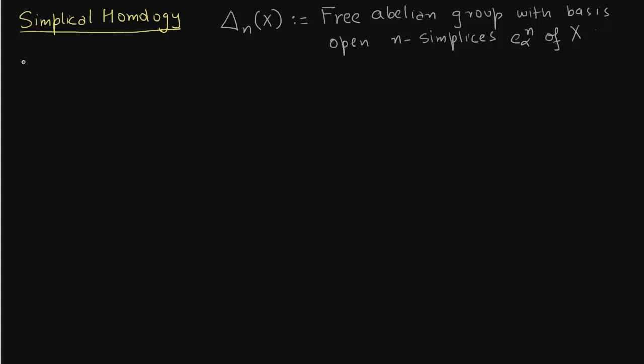Since we have, how does this basis look like, how do the elements of delta n x look like? They are nothing but a sum.